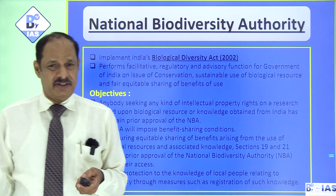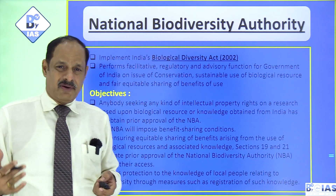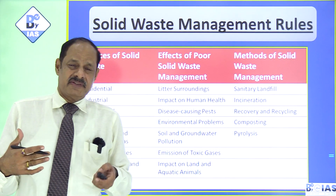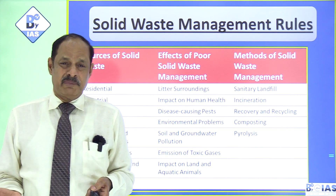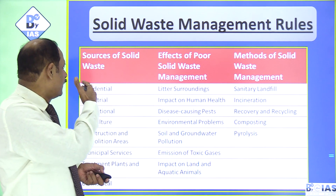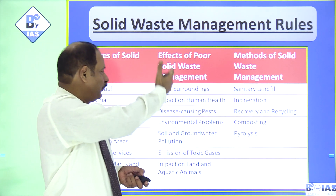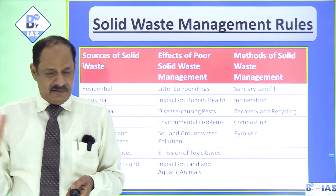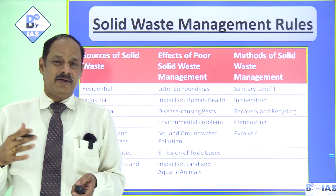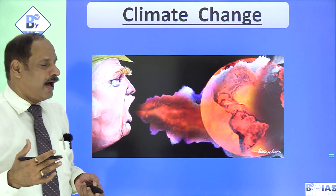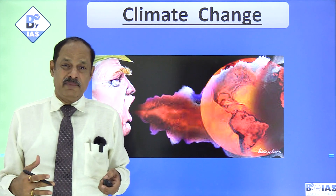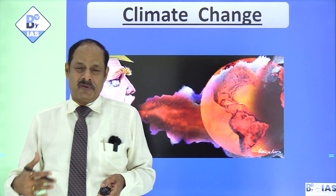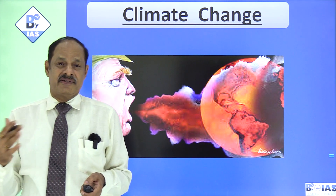Go through the National Biodiversity Authority — why and how it was set up and its basic objectives. The waste management rules have had questions in previous years — divide your study into sources of solid waste, effects of poor solid waste management, and methods of solid waste management. Now, on climate change: go through all the conferences held during the last one to one-and-a-half years, note the outcomes and important findings, and also note India's position on the Climate Change Performance Index.